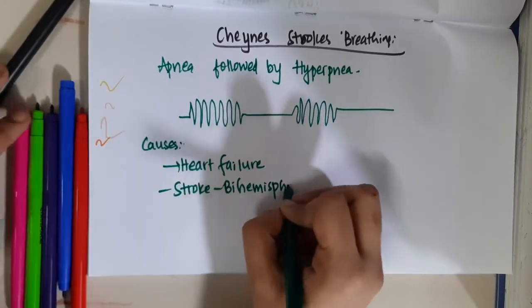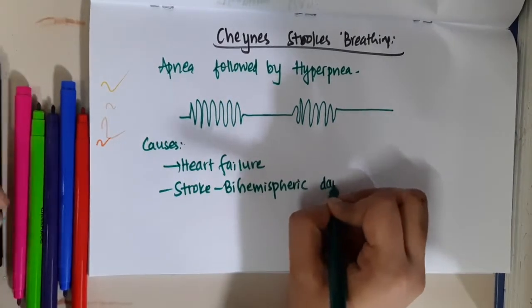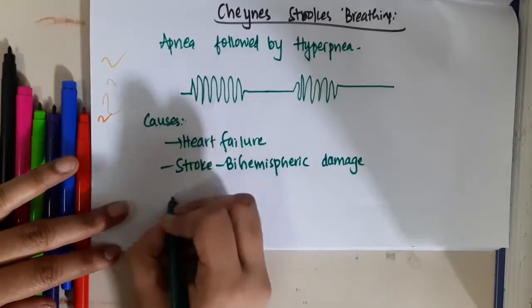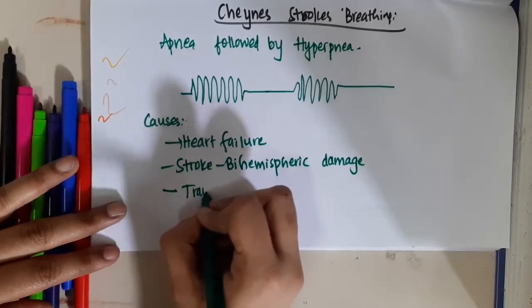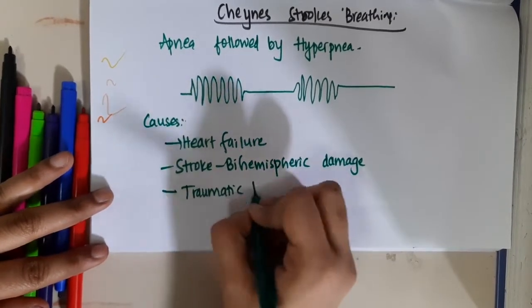In the stroke, if there is bi-hemispheric damage, it can result in Cheyne-Stokes breathing. It can occur in traumatic brain injury.